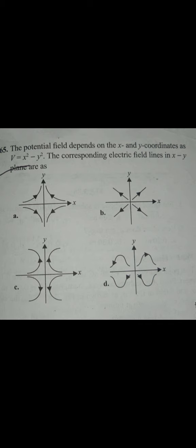The potential field depends upon x and y coordinates as given. So they have given us a potential equation which is equal to x squared minus y squared, and they have asked us the correct representation of electric field lines in the xy plane corresponding to the given equation where V equals x squared minus y squared.